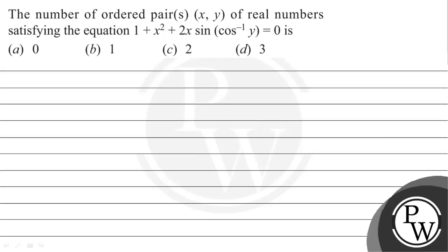Hello. Let's read the given question. The question states that the number of ordered pairs (x, y) of real numbers satisfying the equation 1 plus x squared plus 2x times sin(cos⁻¹y) is equal to 0. The key concepts we will use here to solve this question are as follows.